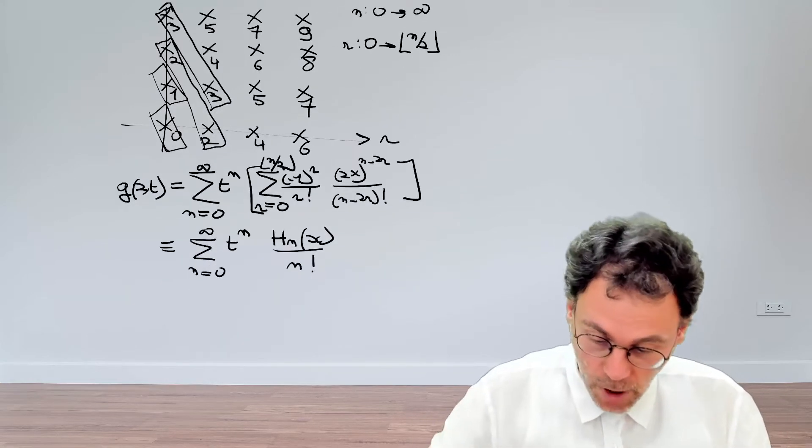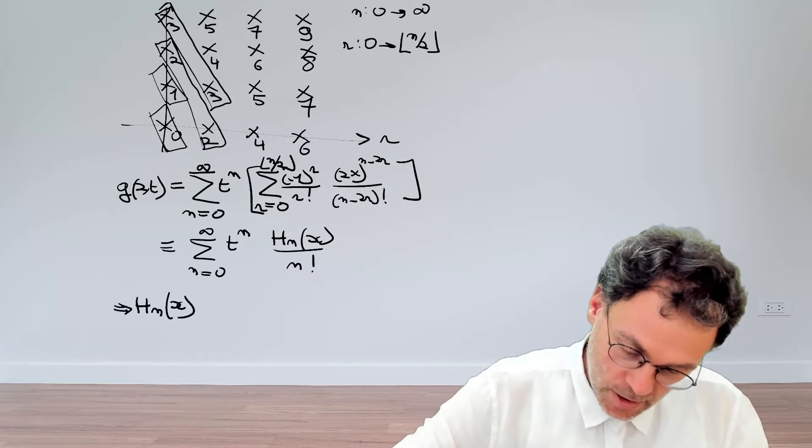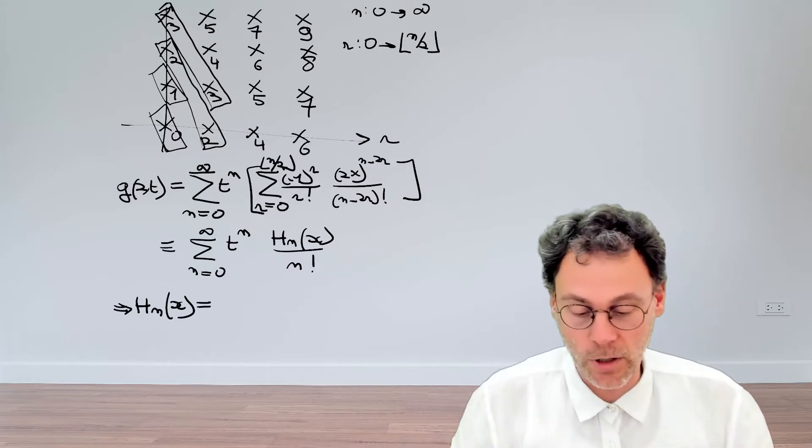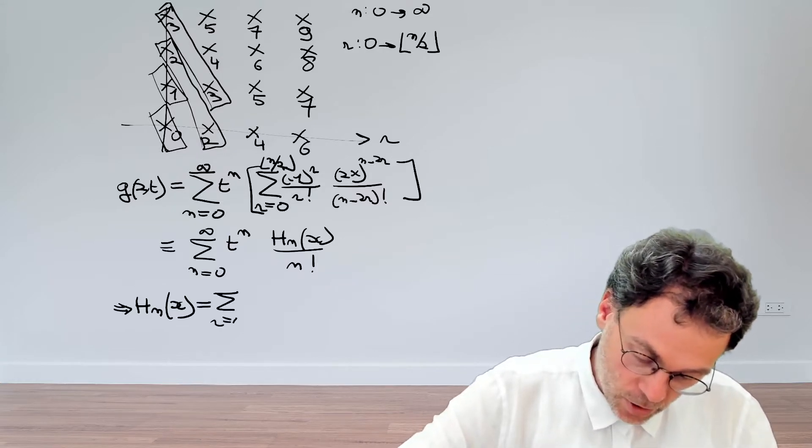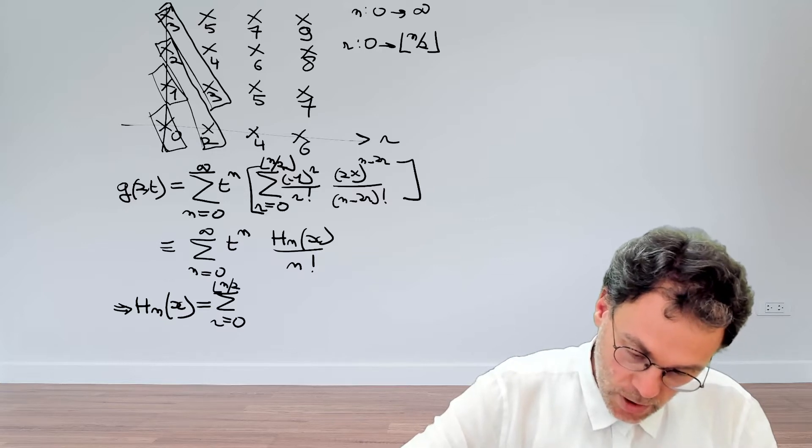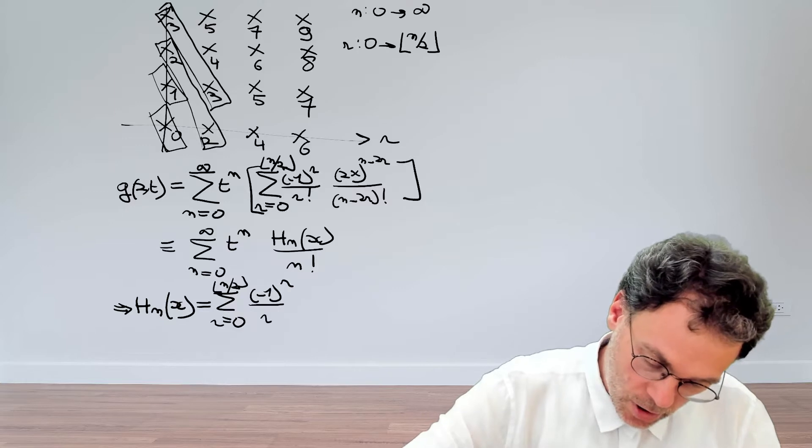And now we're basically in business, we have the final solution. We can easily read that the Hermite polynomial of order n can be written as a sum of r going from 0 to n over 2, minus 1 to the power of r, r factorial,